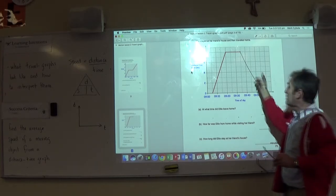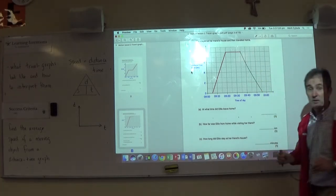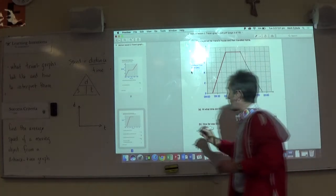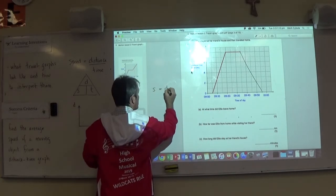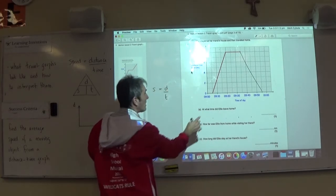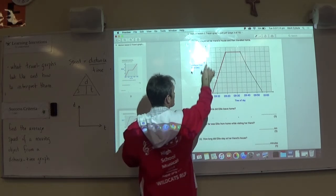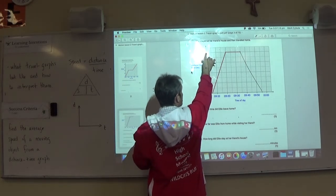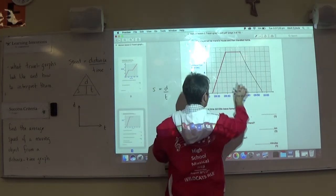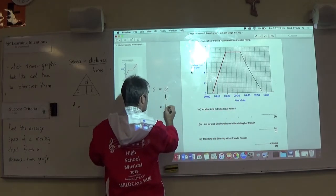My question would be, how do you find the average speed in this particular problem? To find speed using the triangle, which is distance divided by time, I look at my graph here and it shows clearly that she travels a total of eight kilometers to a friend's place and then travels eight kilometers back. So that's a total distance of 16 kilometers.